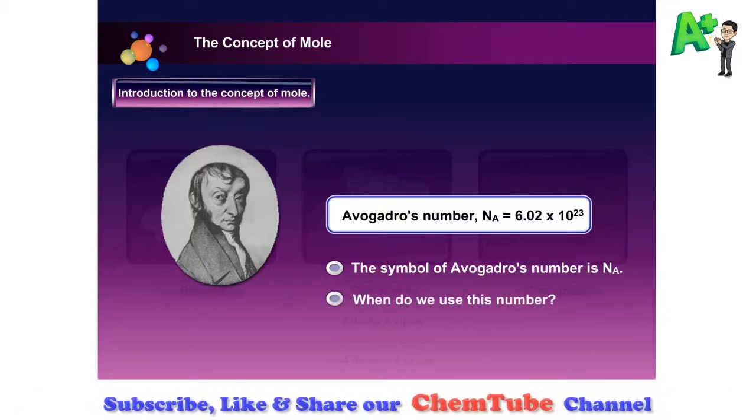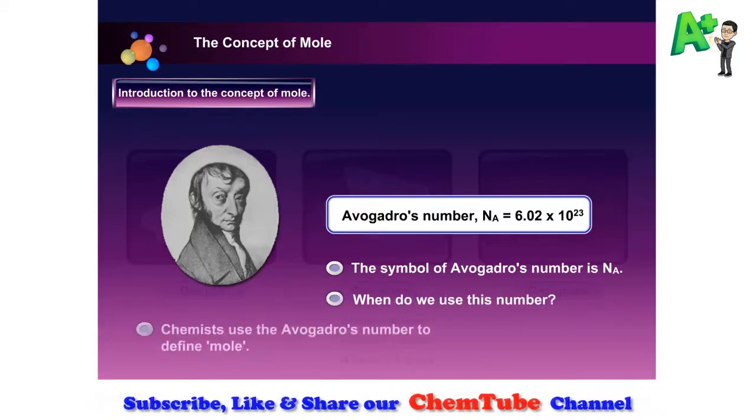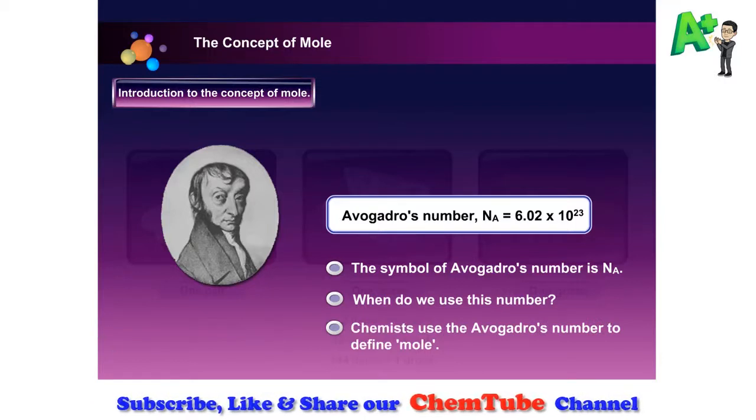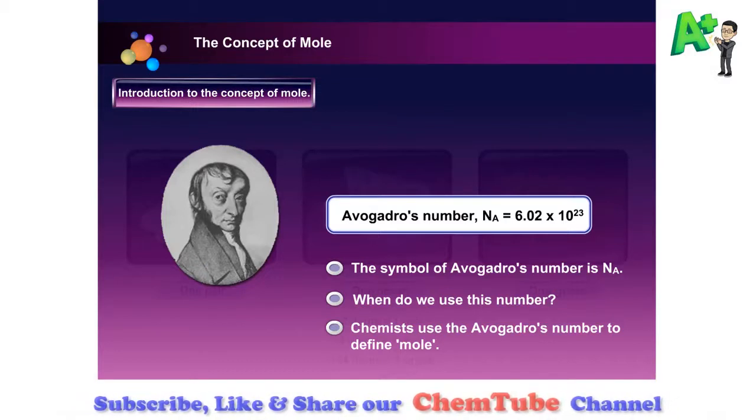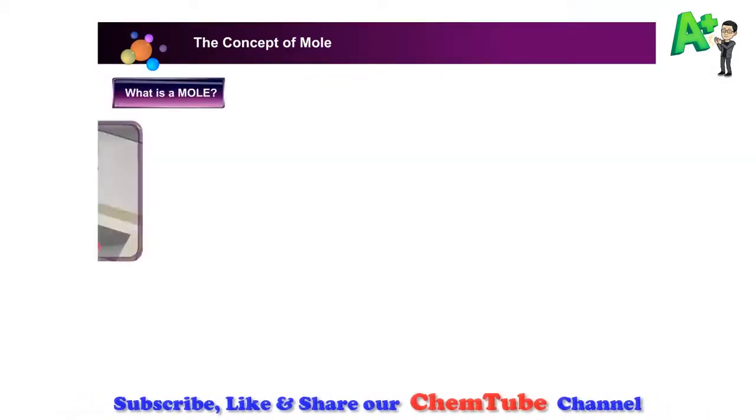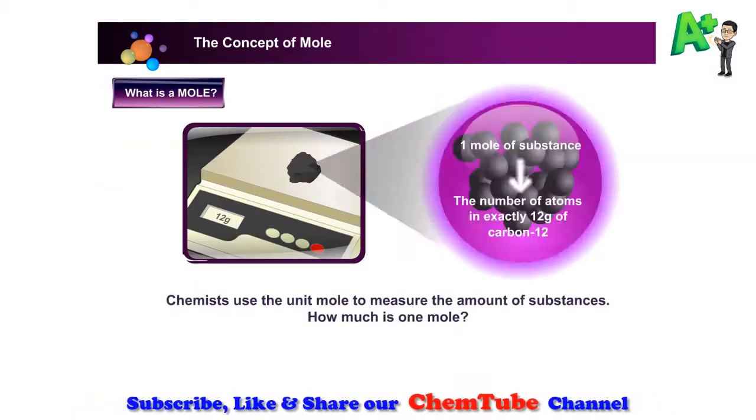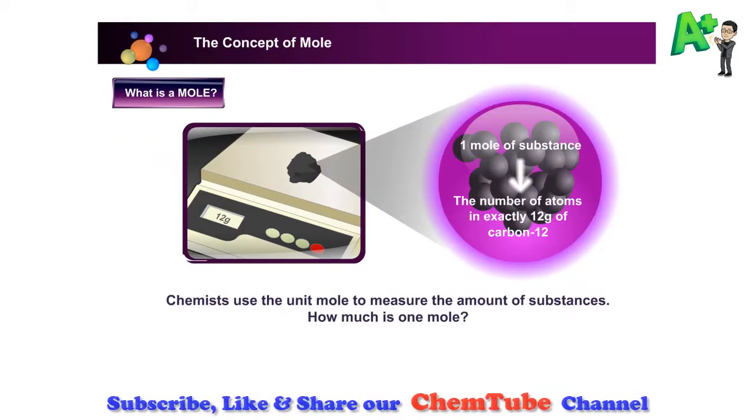When do we use this number? Chemists use Avogadro's number to define a term called mole. So what is mole? Chemists use the unit mole to measure the amount of substances.